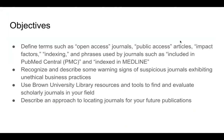Our objectives are to define terms such as open access journals, public access articles, impact factors, indexing, and phrases used by journals such as 'included in PubMed Central' and 'indexed in Medline'; to recognize and describe some warning signs of suspicious journals exhibiting unethical business practices; to use the Brown University Library resources and tools to find and evaluate scholarly journals in your field; and to describe an approach to locating journals for your future publications.